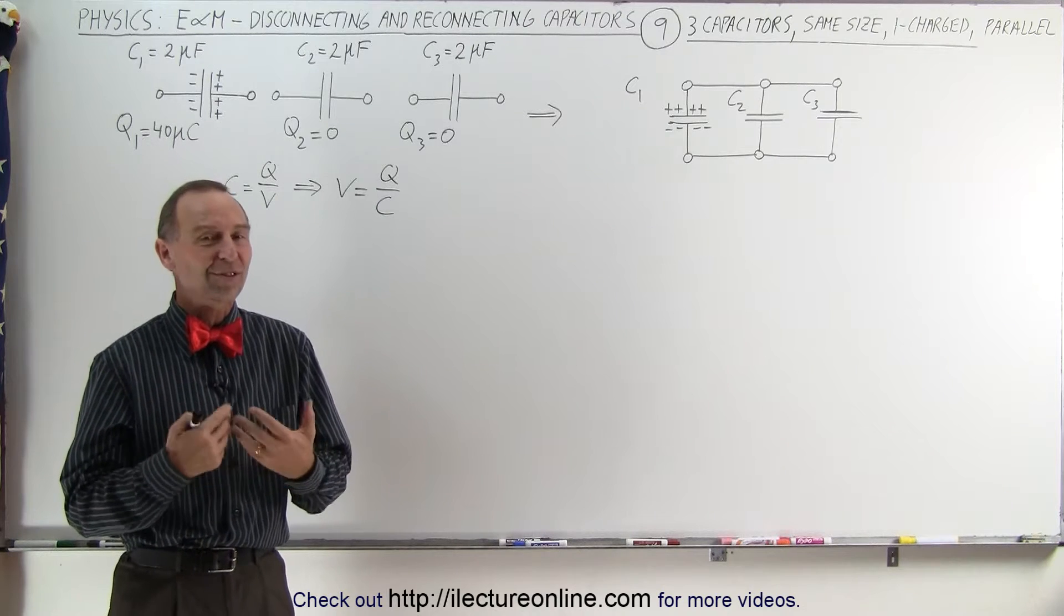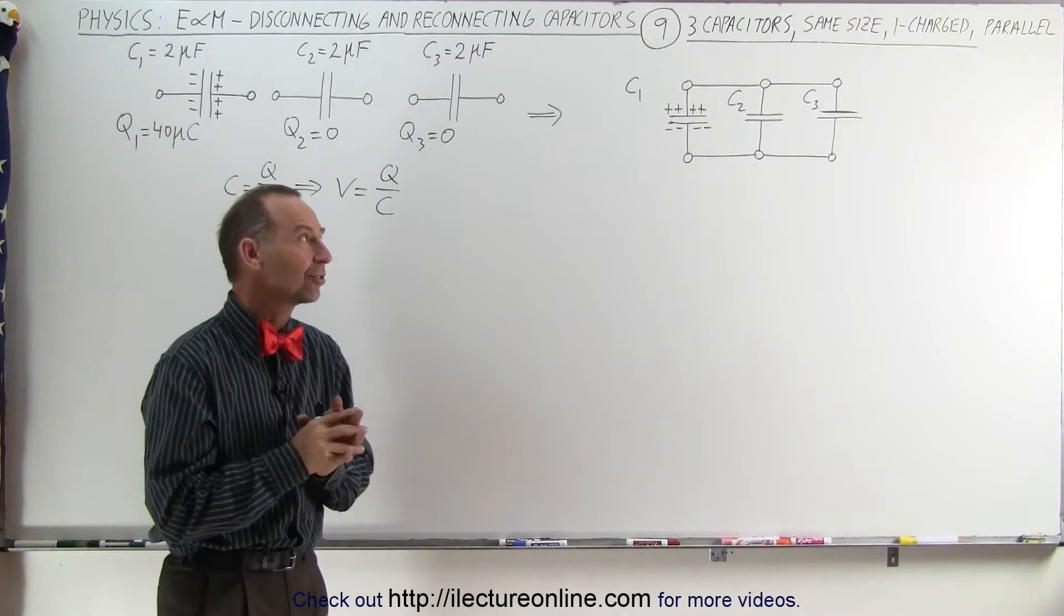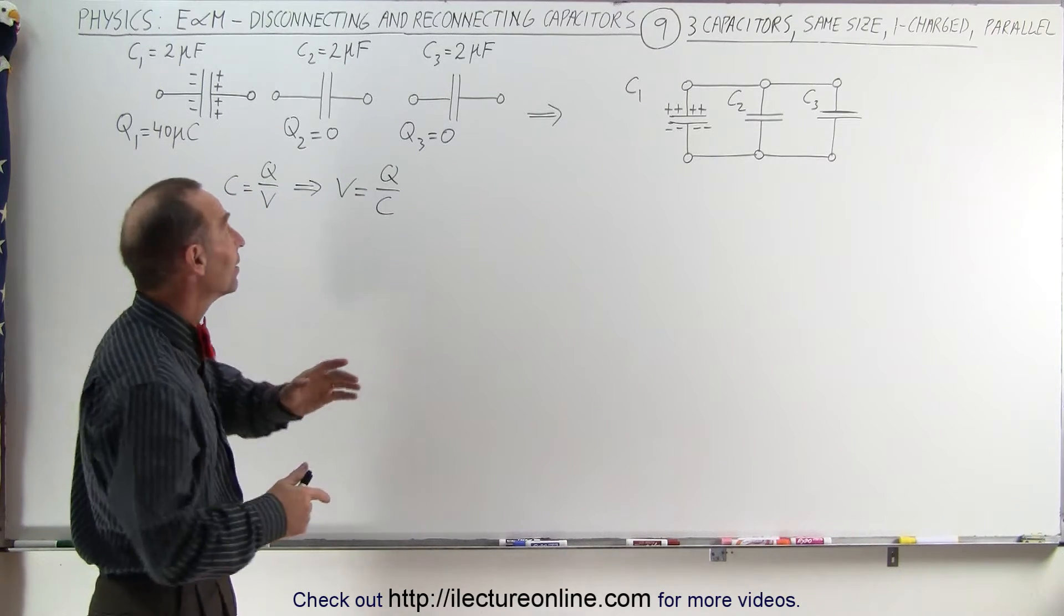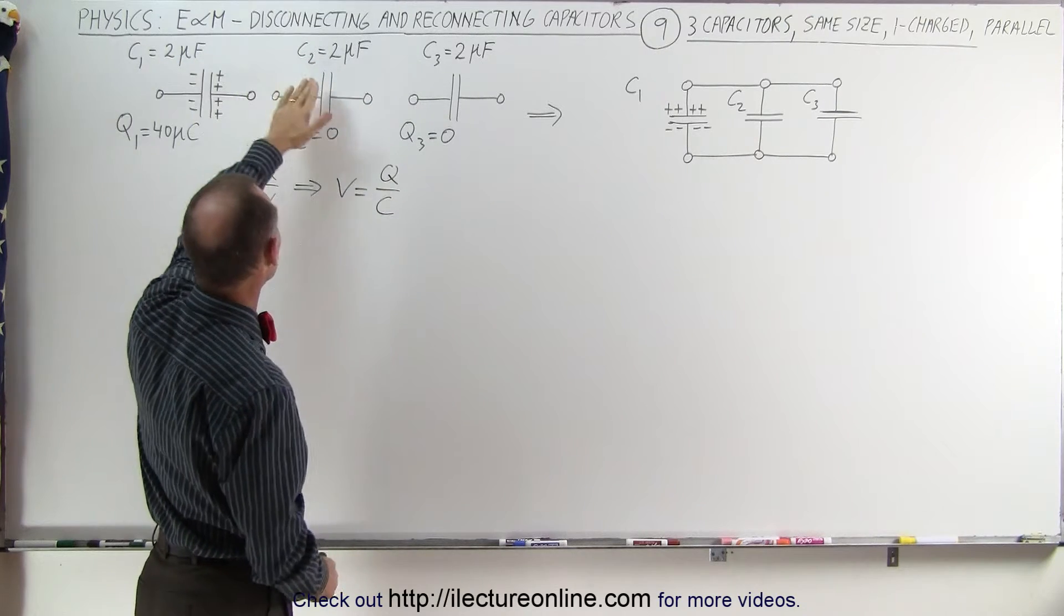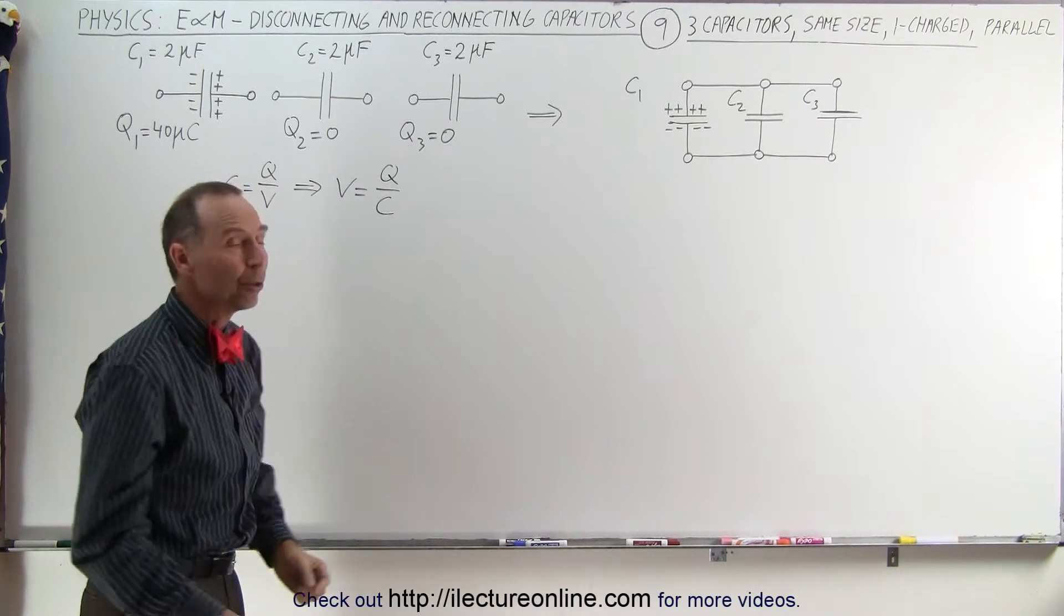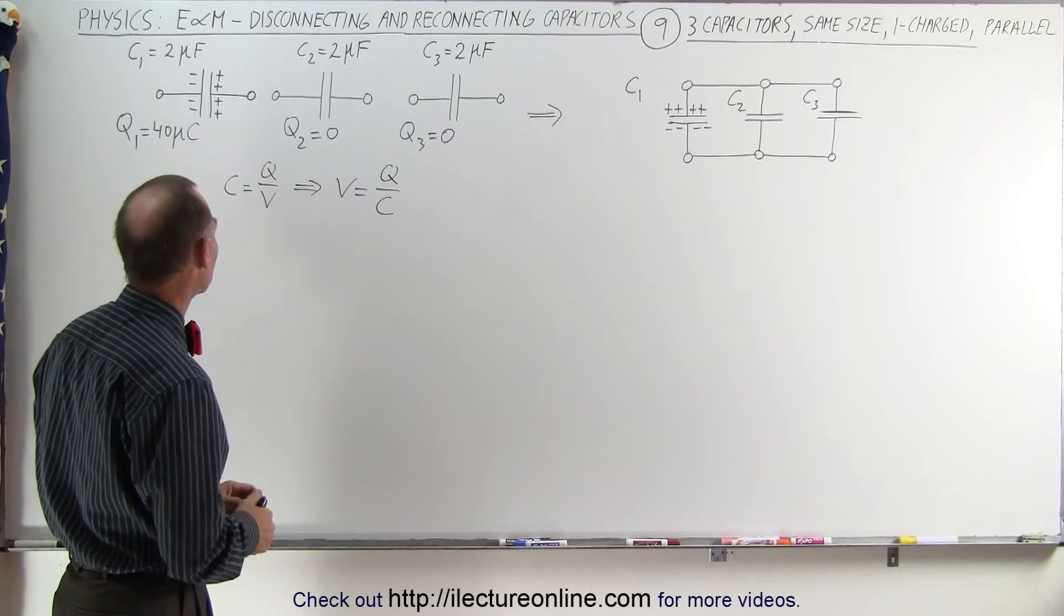So far we've dealt with series connections. Now we're going to do an example where we're connecting them in parallel. We're simplifying it by making each of the three capacitors equal to one another: 2, 2, and 2 microfarads, and only having one of them charged with four microcoulombs of charge.